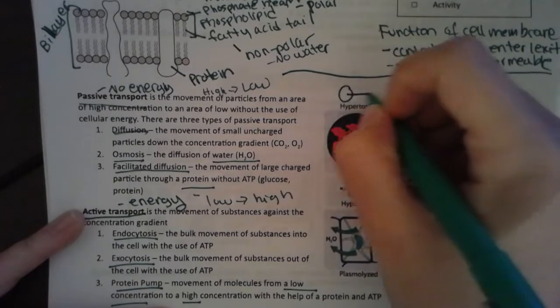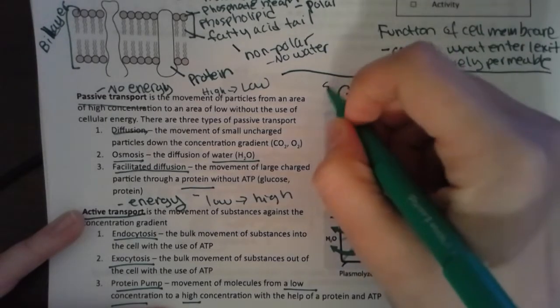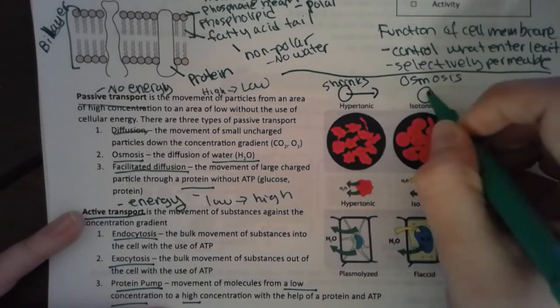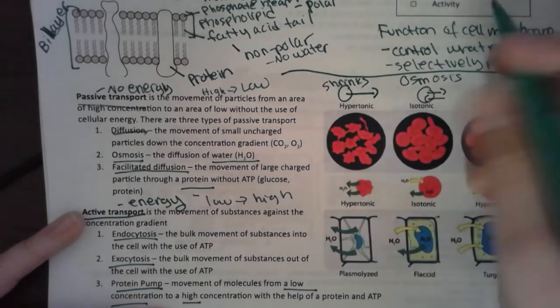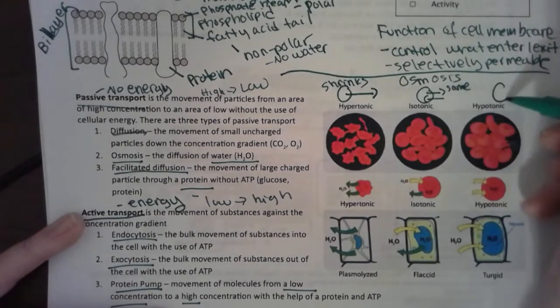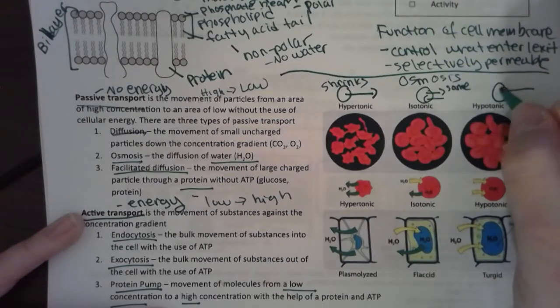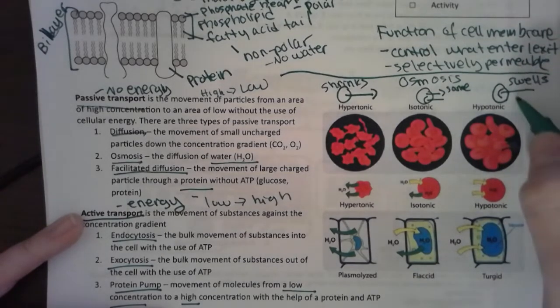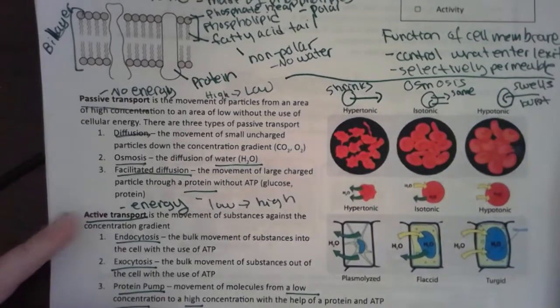Hypertonic means that we have more water leaving the cell, so my cell shrinks. Isotonic means that we have the same amount of water entering and exiting, so nothing changes, it stays the same. And hypotonic, where I have a lot of water coming in, so my cell swells and could even burst or rupture.